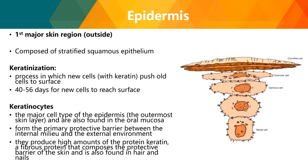Keratinocytes perform the primary protective barrier between the internal milieu and the external environment. They produce high amounts of the protein keratin — a fibrous protein that composes the protective barrier of the skin and is also found in hair and nails.